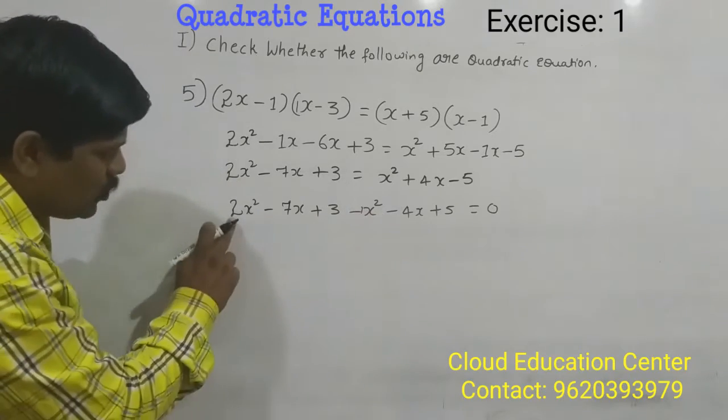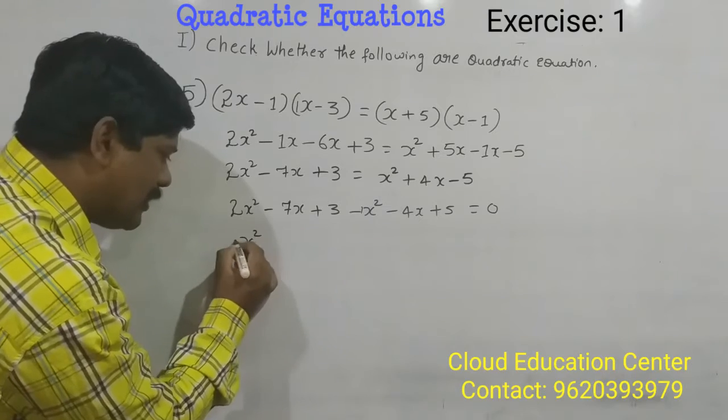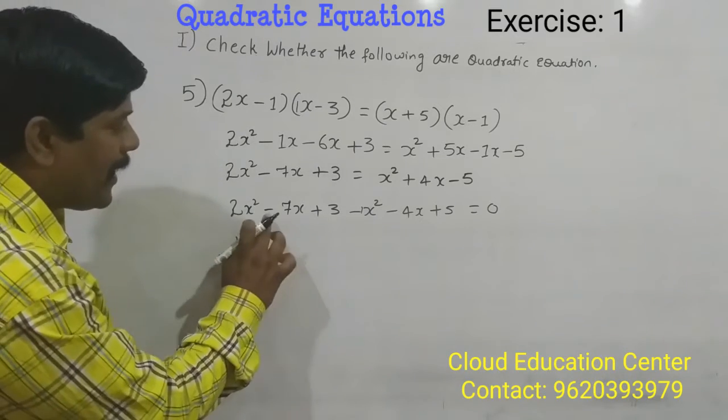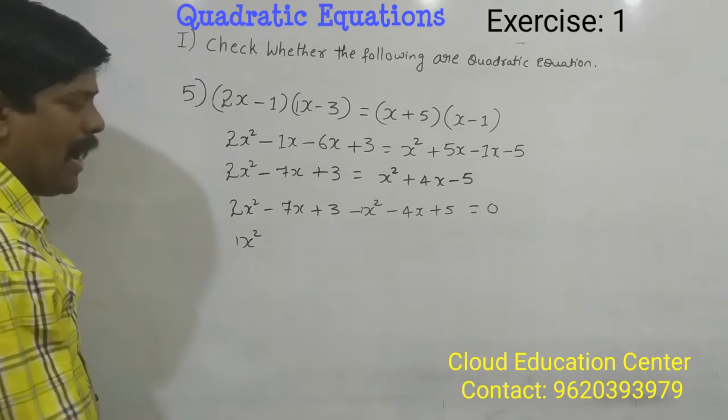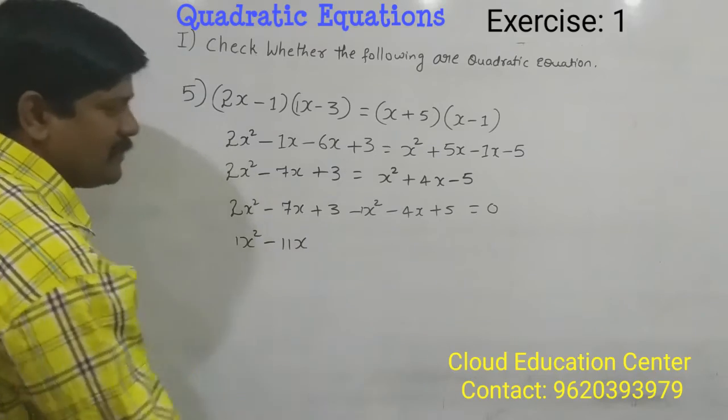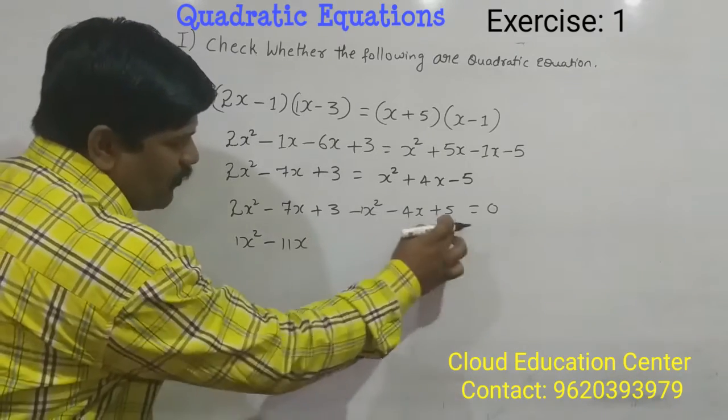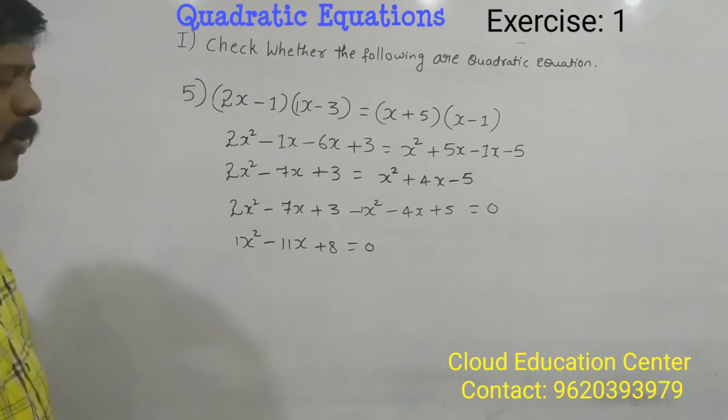Now here 2x square minus 1x square is nothing but x square, that is 1x square. Minus 7x and minus 4x, the same sign is there, you add it becomes minus 11x, and 3 plus 5 is nothing but 8 is equal to 0.